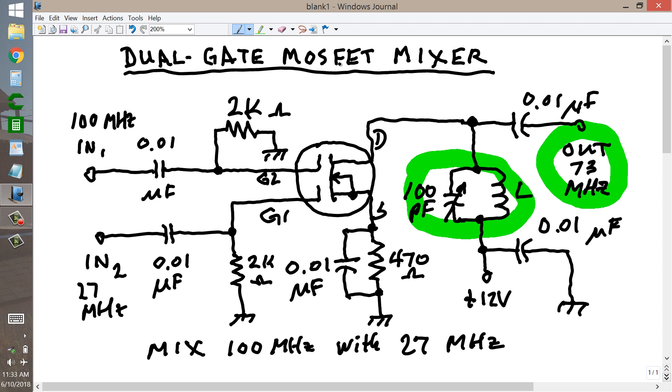And you know it's an N-channel device, because the arrow points in here, so that the drain receives a positive voltage with respect to the source, which in this case is grounded for signal, but biased slightly above ground, to limit the current through the device, and keep the current from shorting it out, from destroying the transistor. If this were dead short here, the current would destroy the MOSFET in short order.